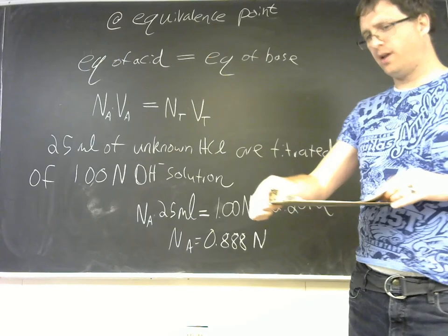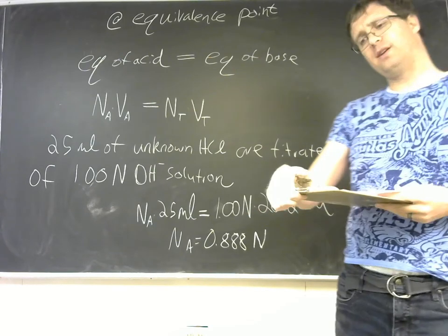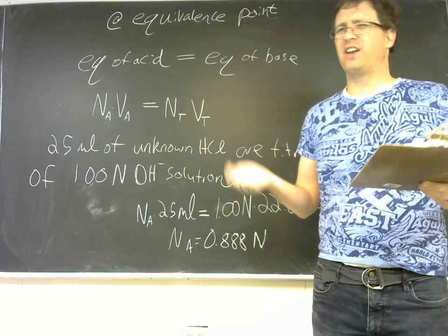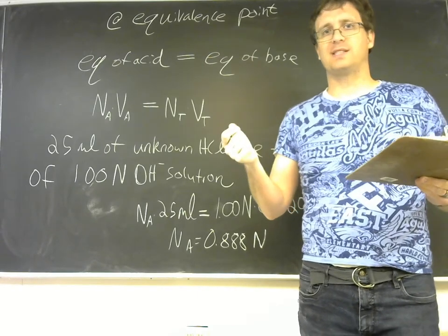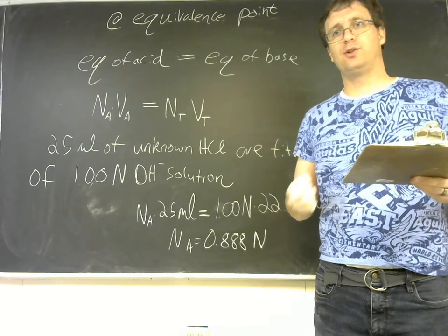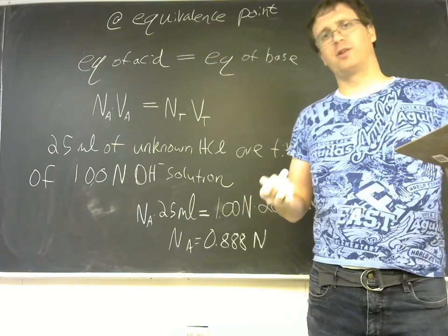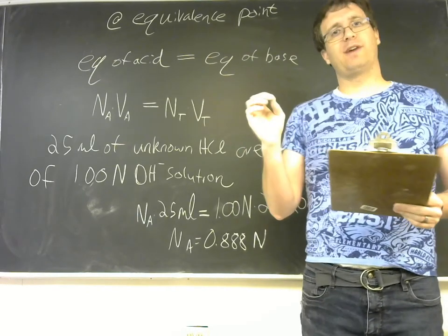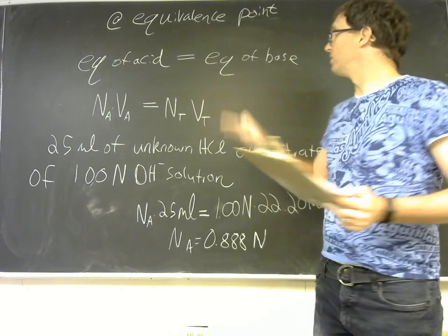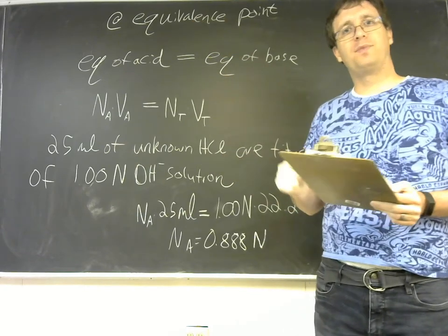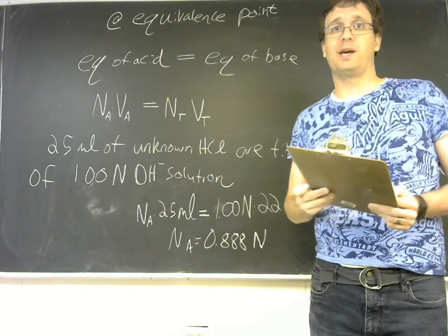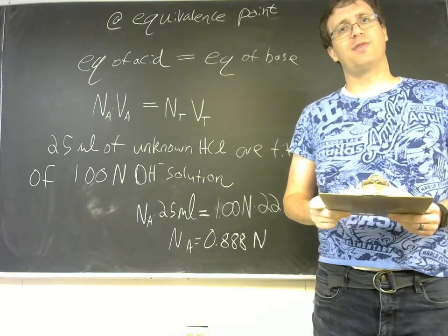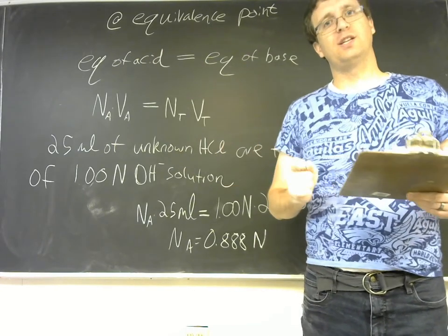The reason why the color indicator works well is because at the equivalence point the pH is swinging very wildly. We calculated last time how adding even just a little bit of acid or just a little tiny bit of base to neutral water that is not buffered by any buffer solution, just a tiny bit of acid or base is going to swing the pH really wildly. So right at the theoretical perfect equivalence point, you'll have neutral water. The acid and the base will have completely neutralized each other. And if you add just the smallest amount of titrant beyond that, then the pH will swing enough to change your color indicator's color.